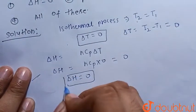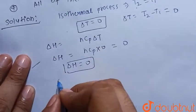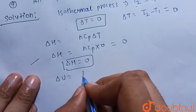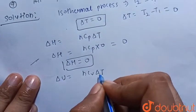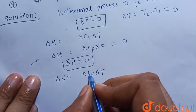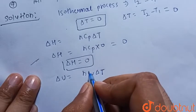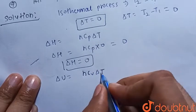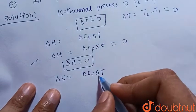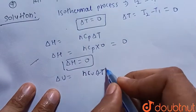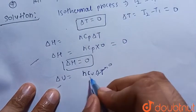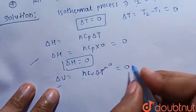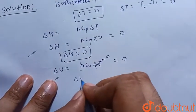We also know that delta U, the internal energy, is equal to N·Cv·delta T, where Cv is the molar heat capacity at constant volume. Since delta T = 0, all this value will also be equal to 0. Hence delta U is also equal to 0.